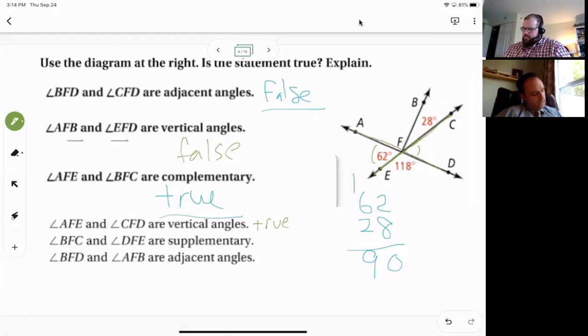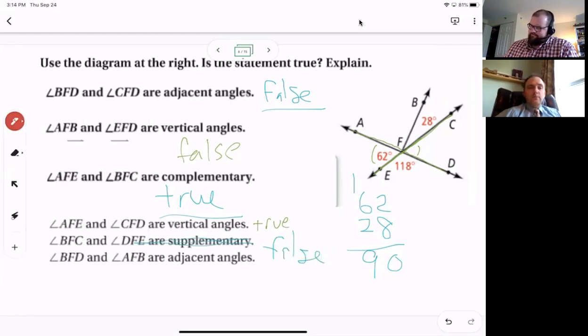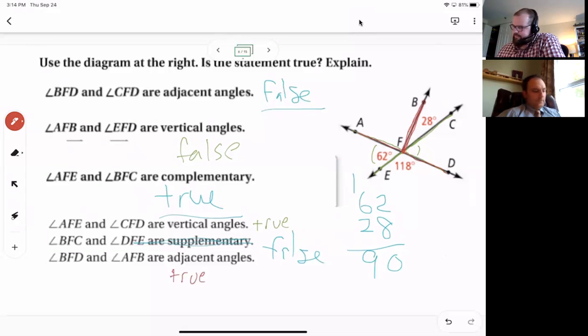BFC and DFE. That would be 28 and 8.18 are supplementary. No. I didn't even bother because 8 and 8 don't make a 0. So there's no way we can get 180 out of that. I like it. And the last one, BFD and AFB are adjacent. So those are next to each other. And they share a common side. And they share a vertex. I'm going to say that's true as well. Love it.